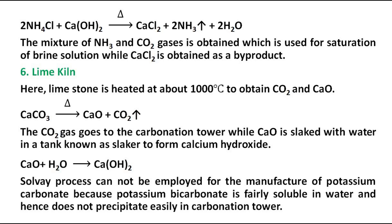Lime Kiln: Limestone is heated at about 1000°C to obtain carbon dioxide gas and calcium oxide. The carbon dioxide gas goes to the carbonation tower, while calcium oxide is slaked with water in a tank known as a slaker to form calcium hydroxide. Note: The Solvay process cannot be employed for potassium carbonate because potassium bicarbonate is fairly soluble in water and hence does not precipitate easily in the carbonation tower.